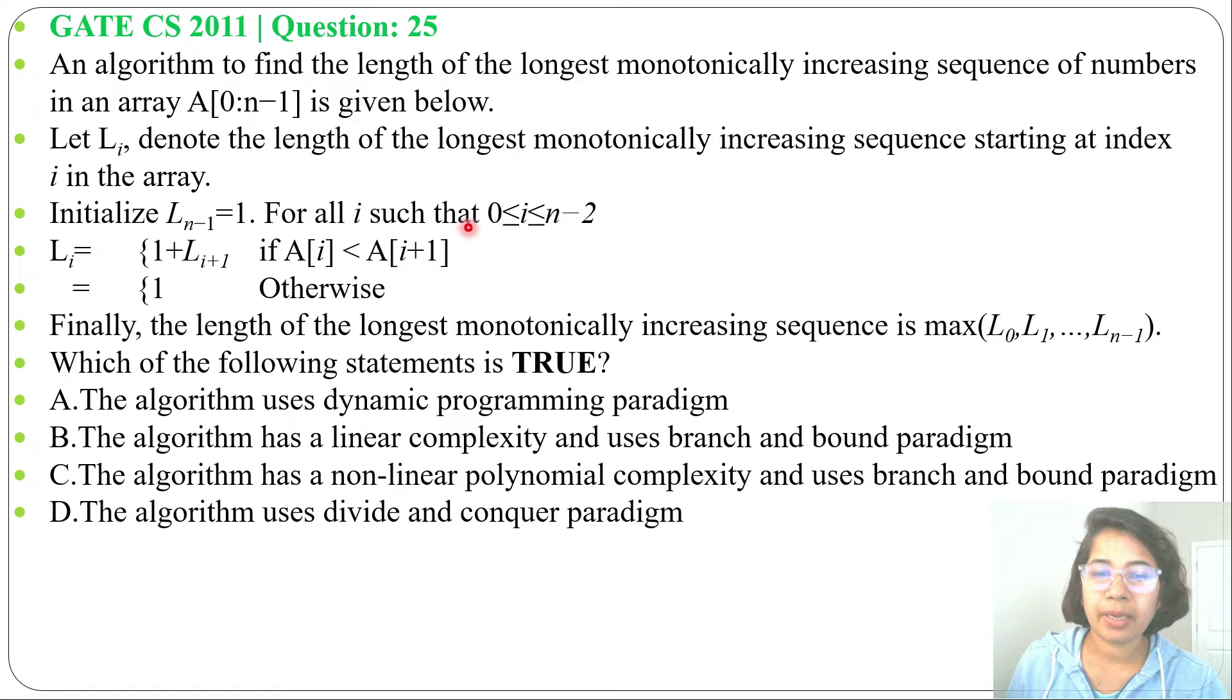Then for all i such that 0 ≤ i ≤ n-2, L_i equals 1 plus L_(i+1) if A[i] < A[i+1], else it is 1.